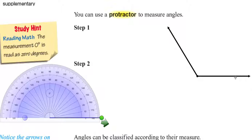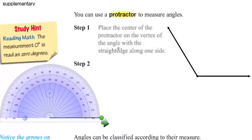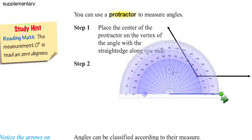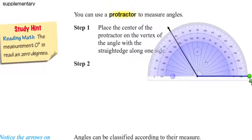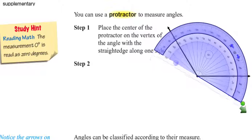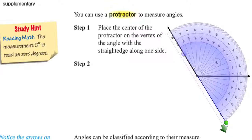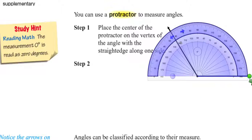So if this is our angle and we want to measure it, step number one: place the center of the protractor on the vertex of the angle with a straight edge along one side. See this vertex right here — you place the center line of your protractor at the vertex. The straight edge should lie along one side. You can measure the angle either way as long as the straight edge is on one side.